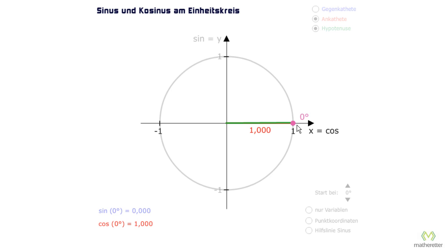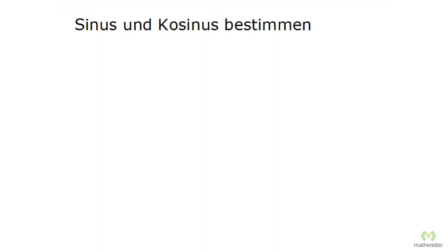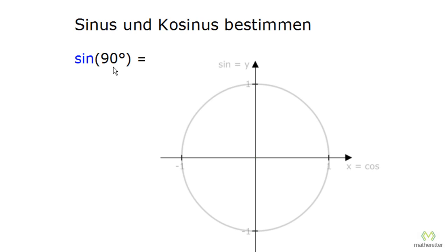Good, if you can do that, then we have taken the next big step. So now you are able to determine sine and cosine with the help of the unit circle. The next time someone asks you what is the sine of 90 degrees, then you imagine the unit circle and draw in the angle. So 90 degrees would be here, and then you know we want sine, and sine is the y-axis, the height. How high up is this point? Right, 1, so sine of 90 degrees is 1.